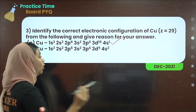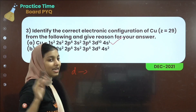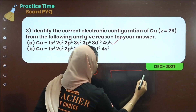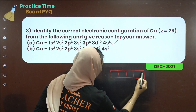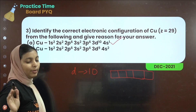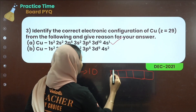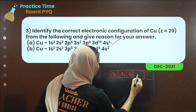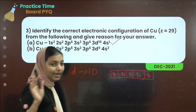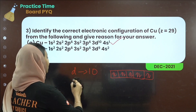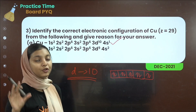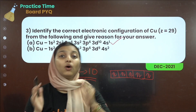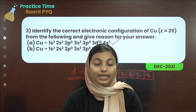We need to write the d orbital. The total number of electrons in d orbitals is 10. The d subshell has 5 orbitals, each accommodating 2 electrons, so 5 × 2 = 10. That's why the maximum number of electrons in d orbitals is 10. A fully filled or half-filled d configuration gives extra stability.